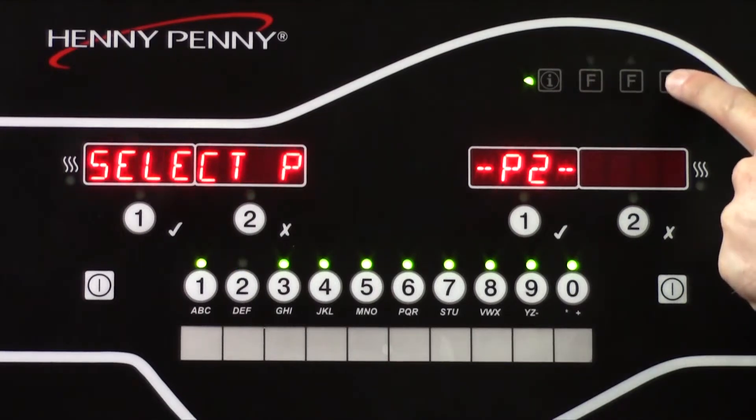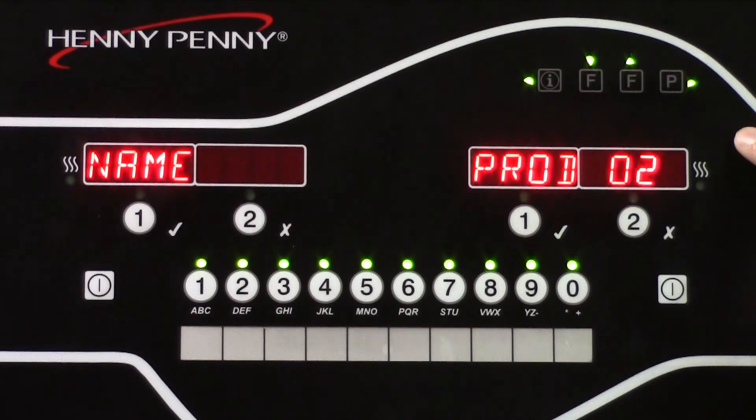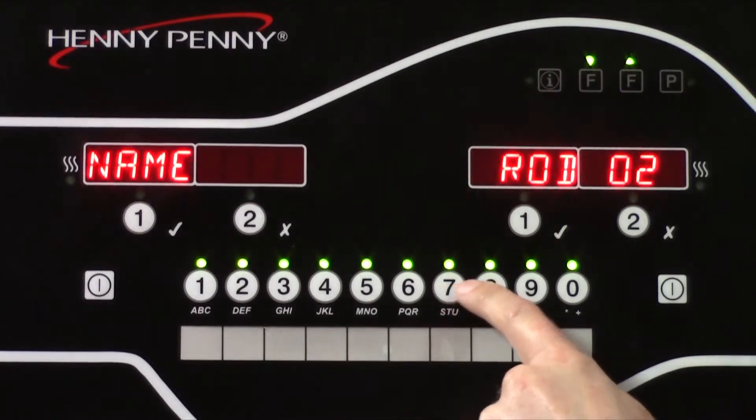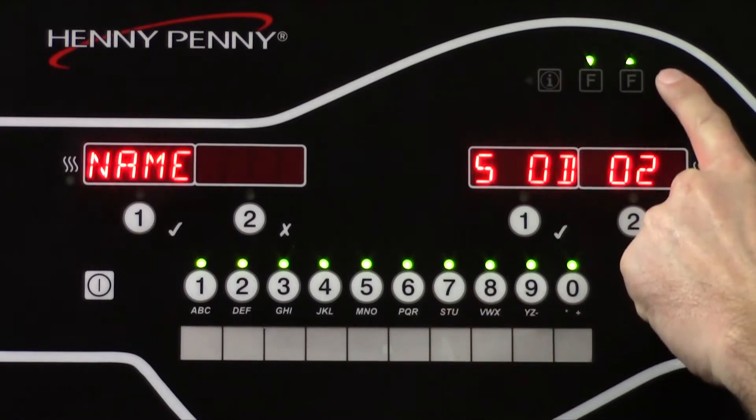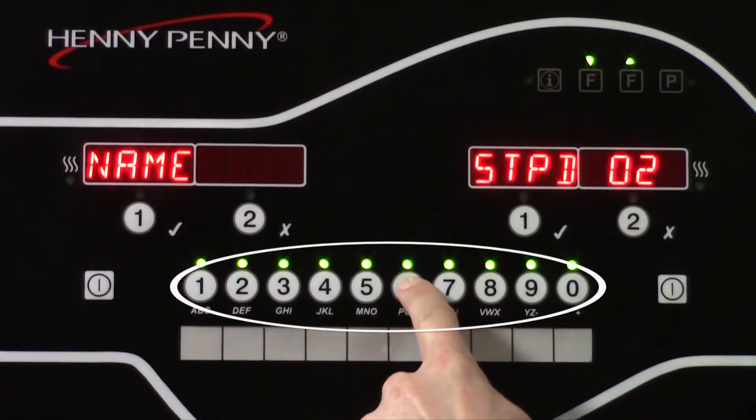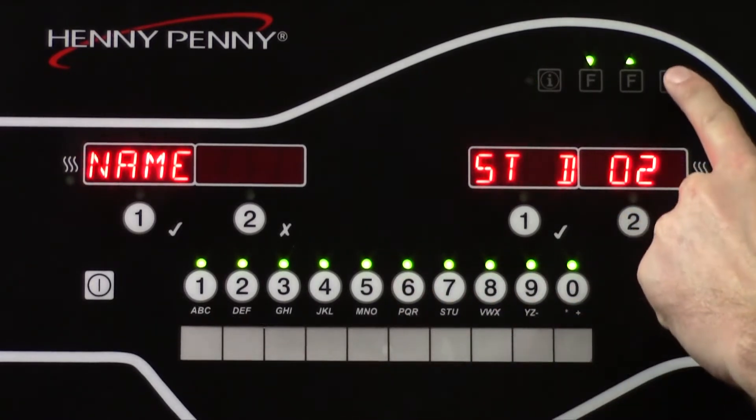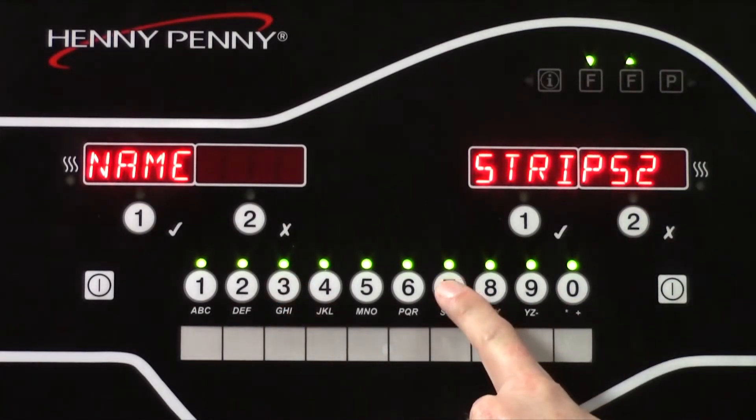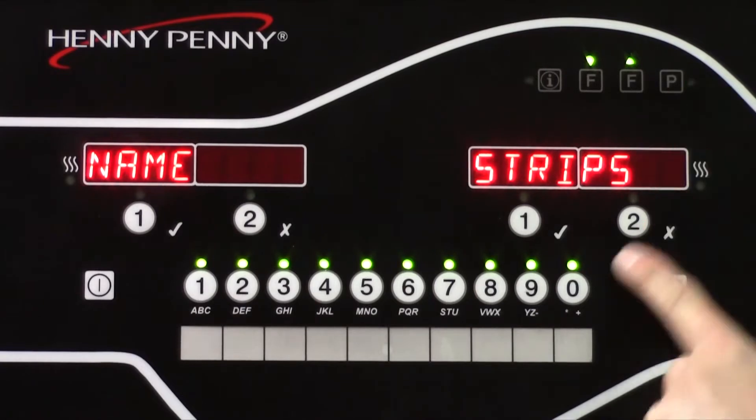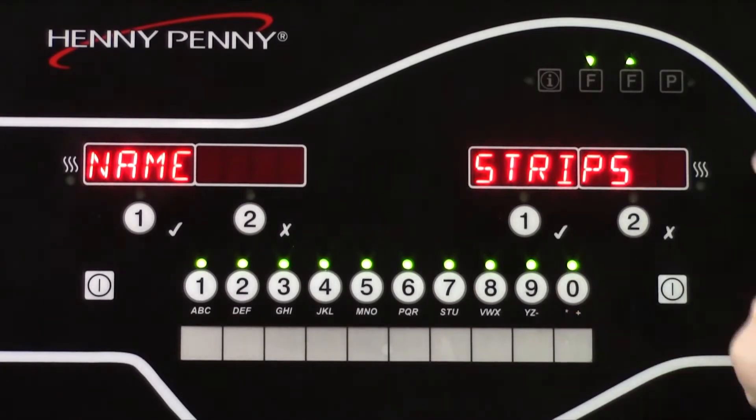Press the right program button one time, and name appears in the display. Use the buttons at the bottom of the display to select the first letter, then advance to the next letter with the P program button. The letters are indicated under each button. For a blank space, use the zero button to find the underscore.